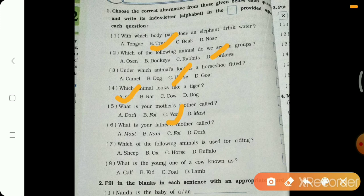Next question. Which of the following animals is used for riding? Chalo, riding ke liye kaunse animal ka use hota hai? Sheep, ox, horse, or buffalo. Hum kiske upar baith sakte hain? On back of horse. Horse ki back ke upar baithte hain, right? Aur riding karte hain.